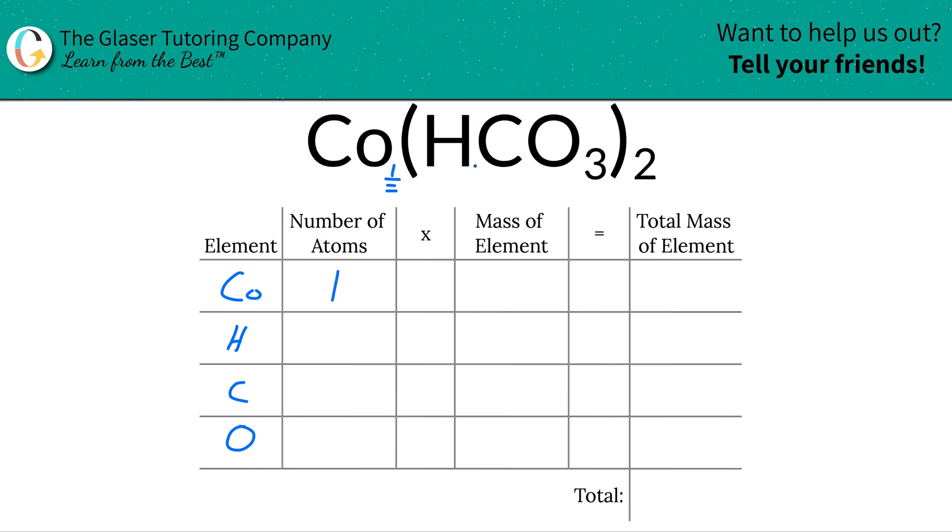For hydrogen now, there is also an invisible one down there, meaning that there's one hydrogen, but this hydrogen is tied up inside of this polyatomic anion hydrogen carbonate, and we have two hydrogen carbonates. Therefore, we'll have two hydrogens in total.